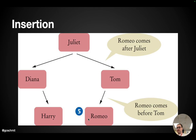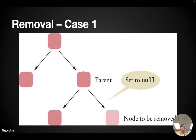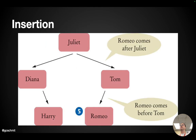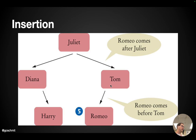For example, let's say we have Juliet, Diana, Harry, and Tom, and we're inserting Romeo. We start at the root, Juliet, and ask: is Romeo less than or greater than Juliet? It's greater, so we go right. Is Romeo less than or greater than Tom? Romeo comes before Tom alphabetically, so we go left. Tom has no left child, so we make a new node and that's where we put Romeo. That's the insertion algorithm.